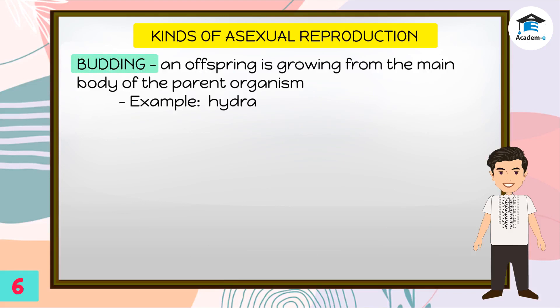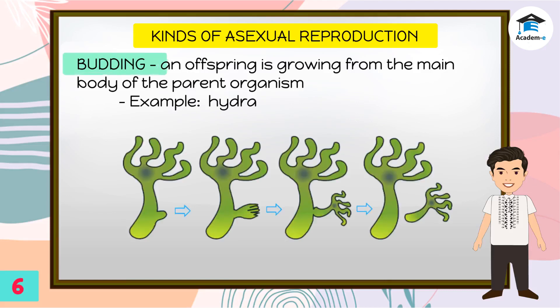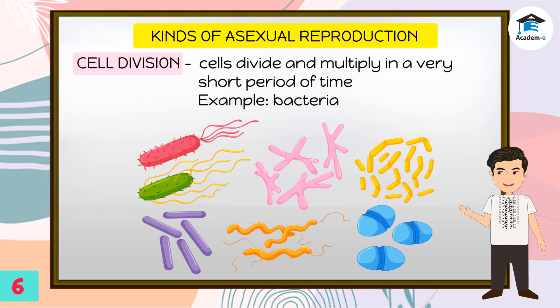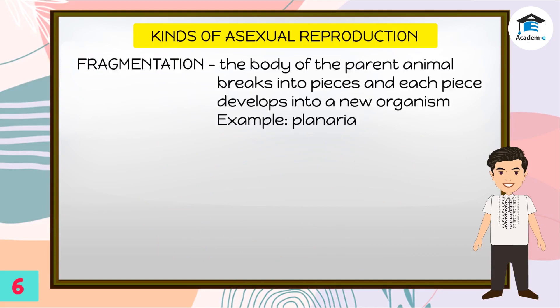A good example of an organism that reproduces through budding is hydra. Cell division is a kind of asexual reproduction wherein cells divide and multiply in a very short period of time. Bacteria are examples of organisms that undergo cell division. Fragmentation is another kind of asexual reproduction that some organisms undergo. In this process, the body of the parent animal breaks into pieces and each piece develops into a new organism. One animal that reproduces through fragmentation is the planaria.